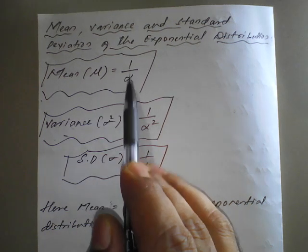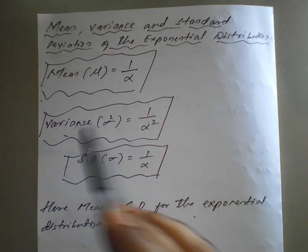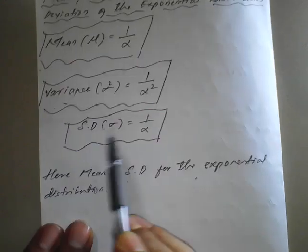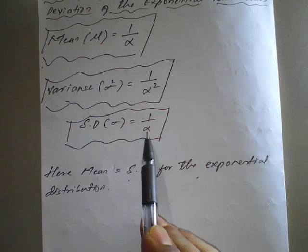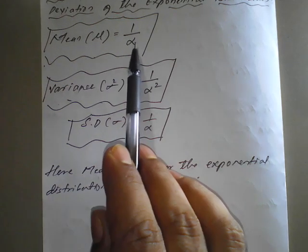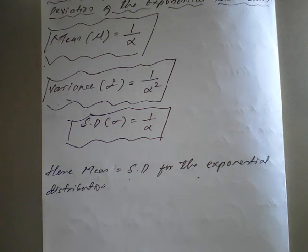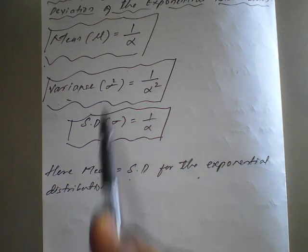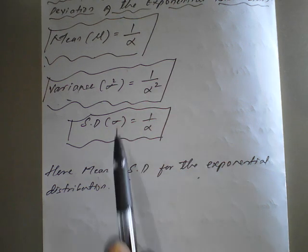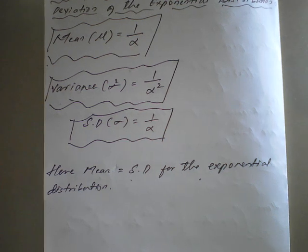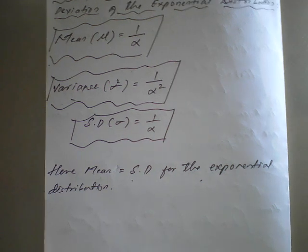For the exponential distribution, the mean is given by 1 upon alpha, the variance is 1 upon alpha squared, and the standard deviation is 1 upon alpha. Notice that the mean and standard deviation are equal for the exponential distribution. With this concept and the expression for the distribution, we will now see the examples.